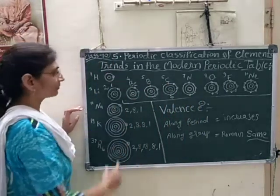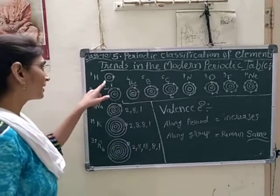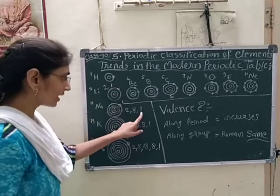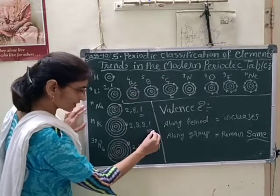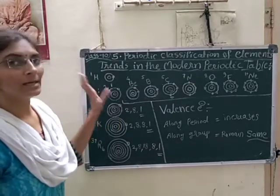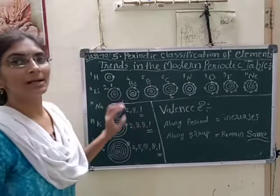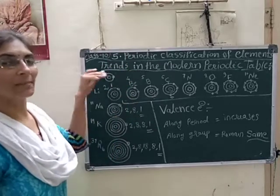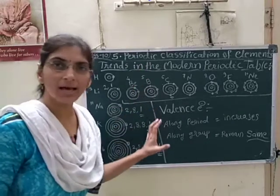But along the group, the valence electron — we can see everywhere one valence electron is here. In case of lithium, one valence electron. Sodium also one valence electron. Potassium also having one valence electron. So along the group, the valence electrons are same in quantity.